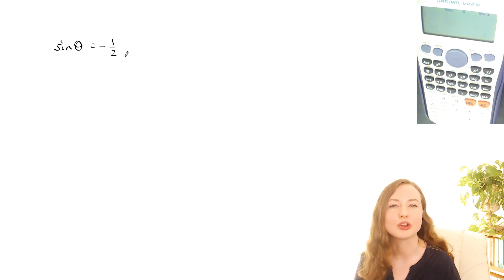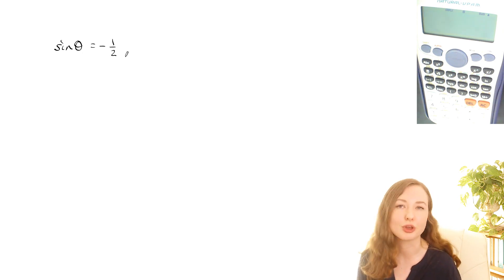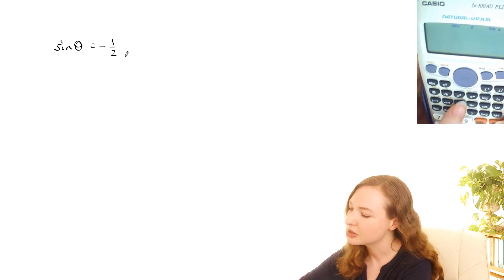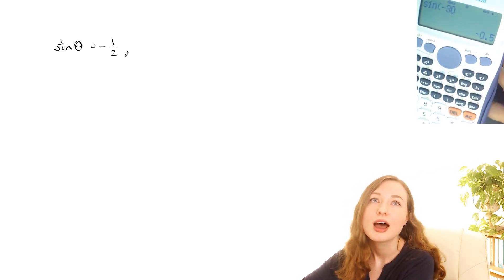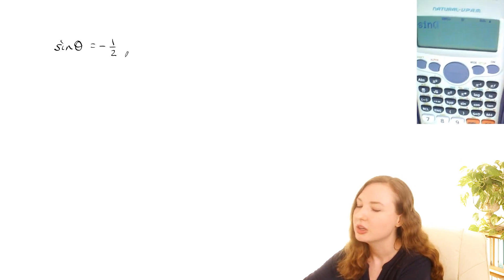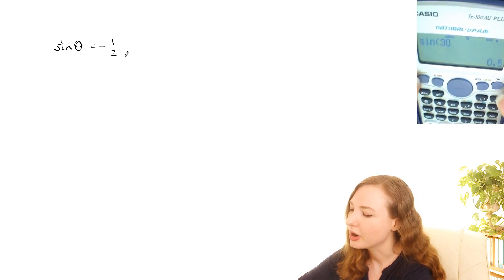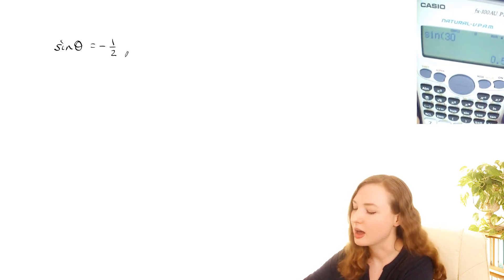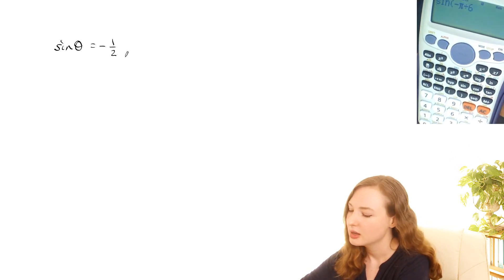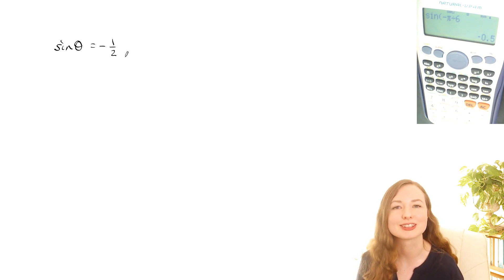If you're not confident about your answers, you can always check them on the calculator. For example, if you were solving sin theta equals negative a half and thought negative 30 degrees was the solution, make sure your calculator is in degrees mode, type in sin negative 30, hit equals, and it says negative 0.5 — so that one's correct. If you had thought 30 degrees was a solution, sin 30 gives positive 0.5 so that's wrong. If you're working in radians, switch to radians mode, type in negative pi on 6, and that gives negative 0.5 — confirming it's right.